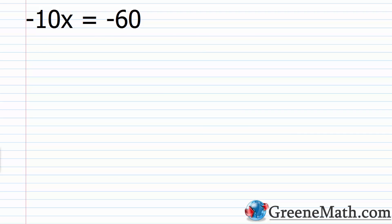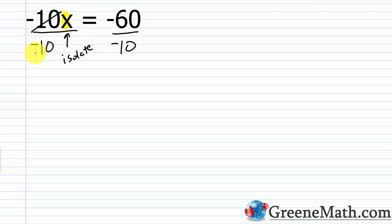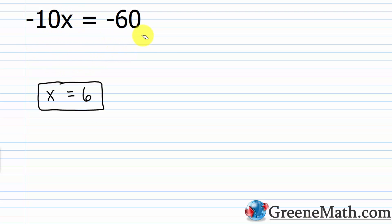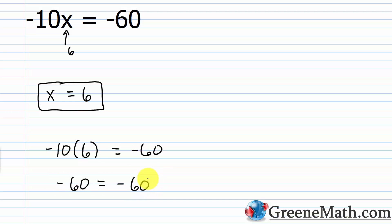Let's look at negative 10x equals negative 60. We have an integer coefficient of negative 10 multiplying x. To isolate x, I divide both sides of the equation by negative 10. Negative 10 divided by negative 10 gives 1, and 1 times x is just x. On the right, negative 60 divided by negative 10 is 6. So x equals 6. Checking: negative 10 times 6 equals negative 60 — negative times positive is negative, 10 times 6 is 60 — so negative 60 equals negative 60. x equals 6 is correct.